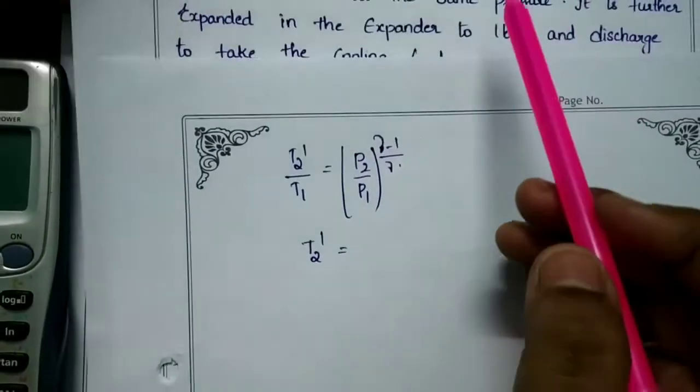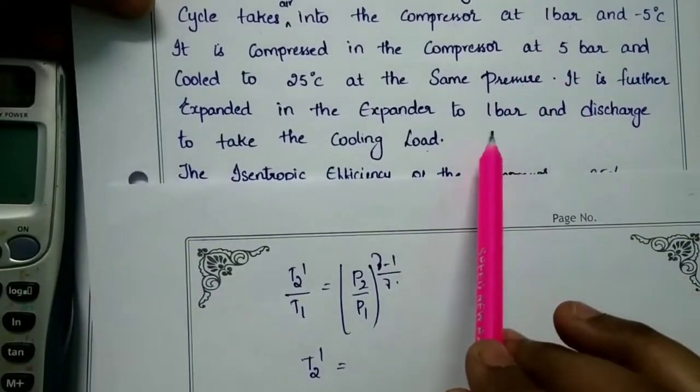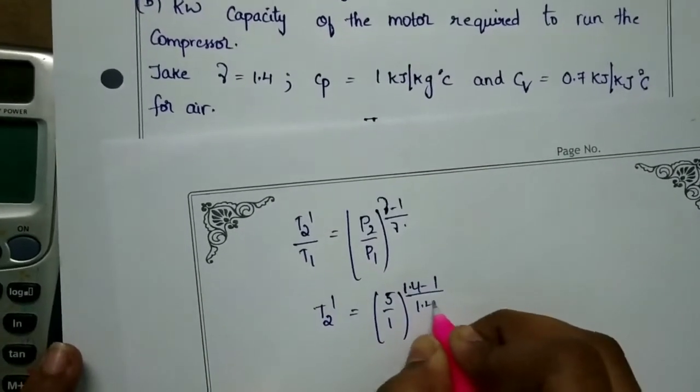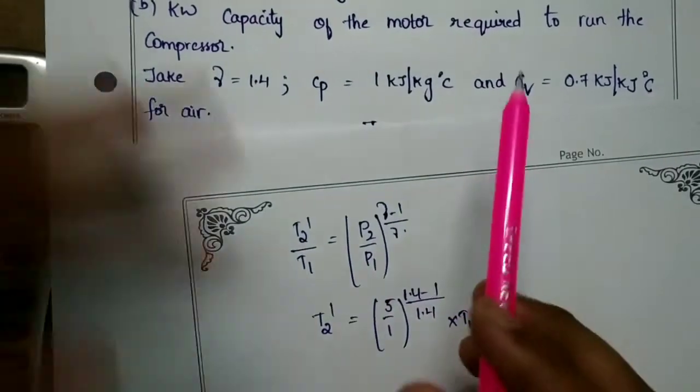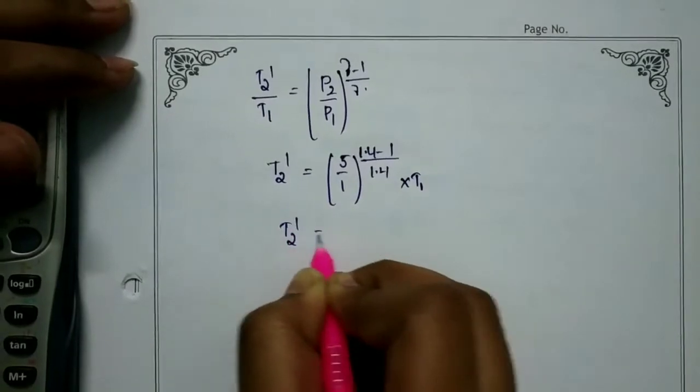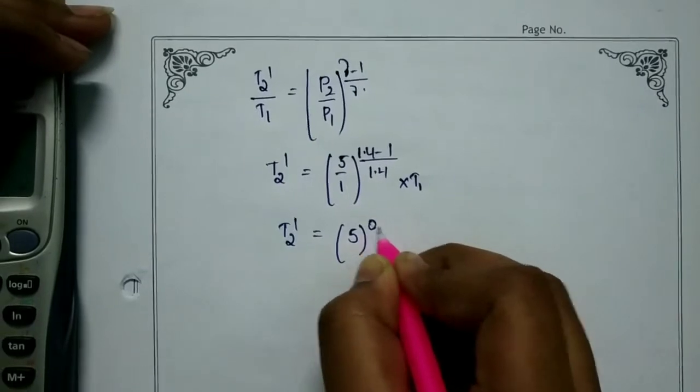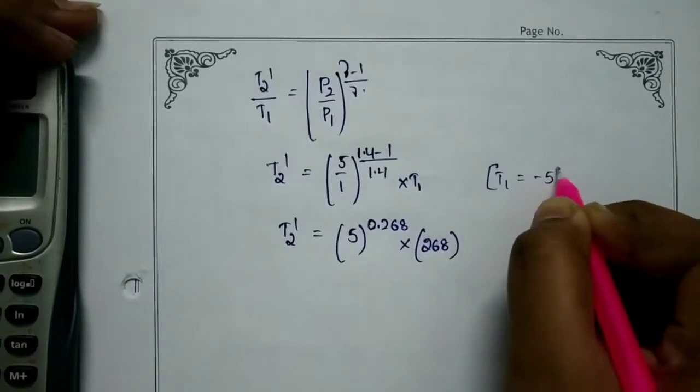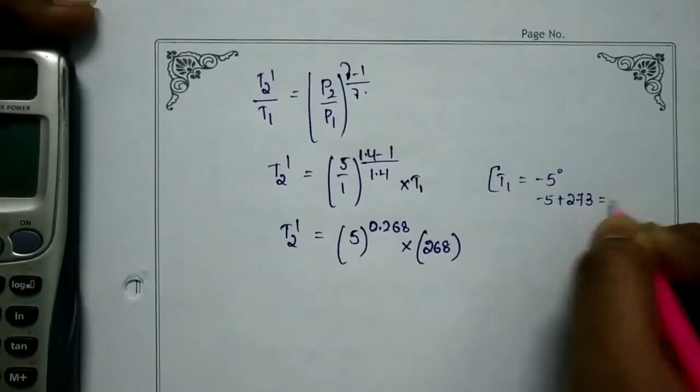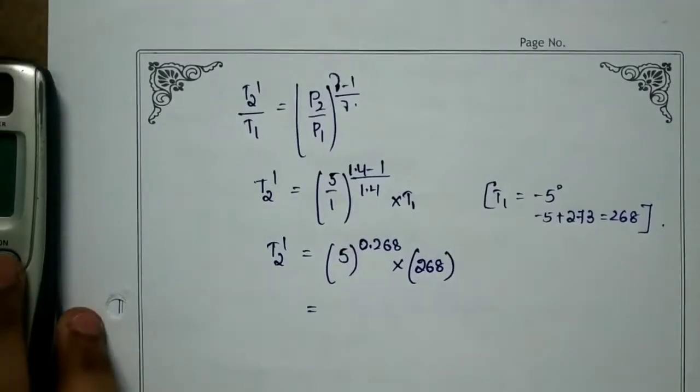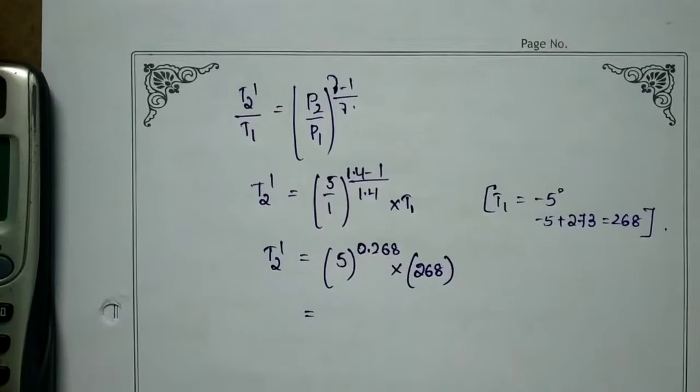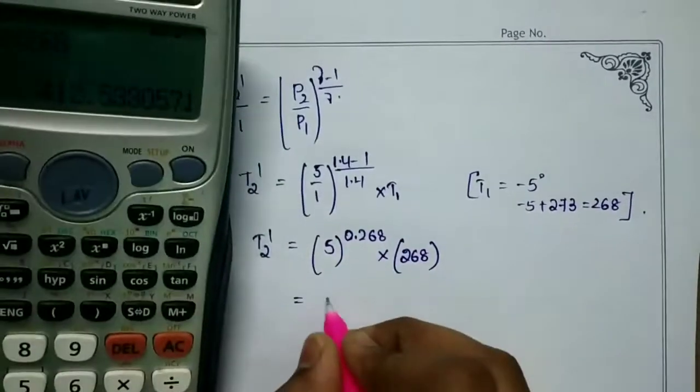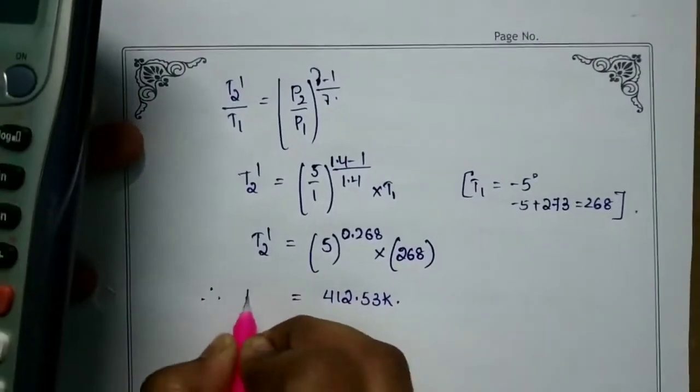T2 dash is equal to 5 by 1 to the power 1.4 minus 1 by 1.4 into T1. T1 is minus 5 degrees Celsius, which is 268 Kelvin. So T2 dash is equal to 5 to the power 0.268 into 268, which equals 412.53 Kelvin.